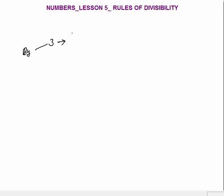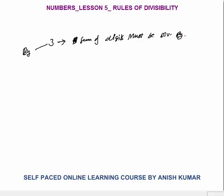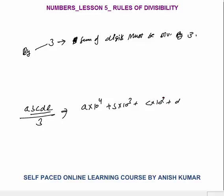Next is divisibility by 3. If you want to check whether a number is divisible by 3, the sum of digits must be divisible by 3. If the sum of digits is divisible by 3, the number is completely divisible by 3. What's the logic? For a number a, b, c, d, e — this can be written as a × 10⁴ + b × 10³ + c × 10² + d × 10 + e, divided by 3.